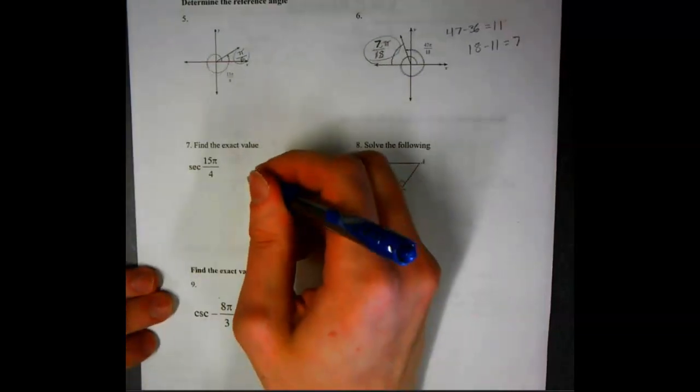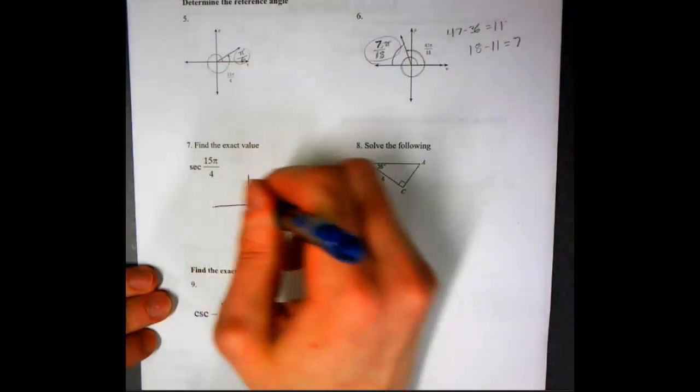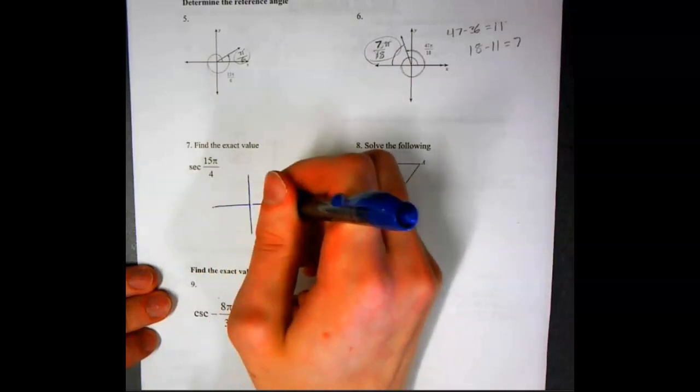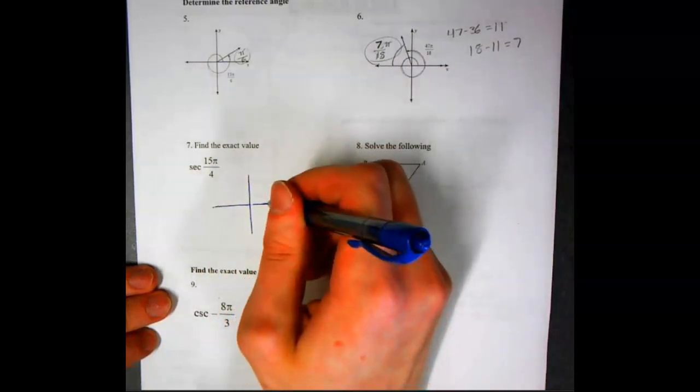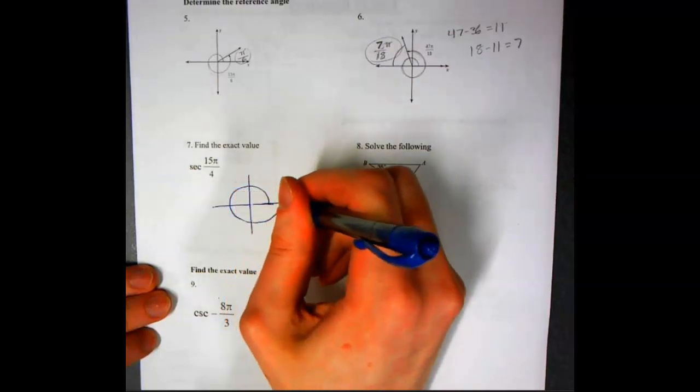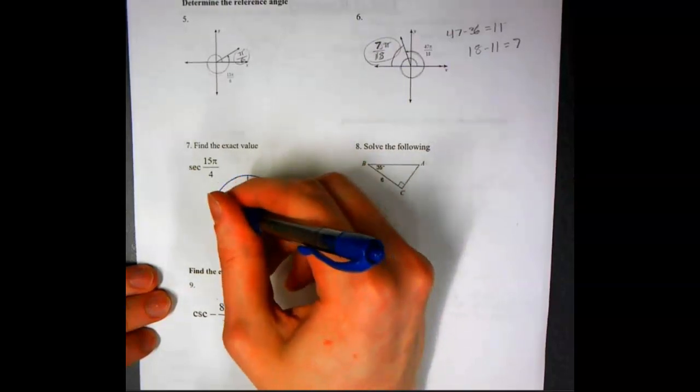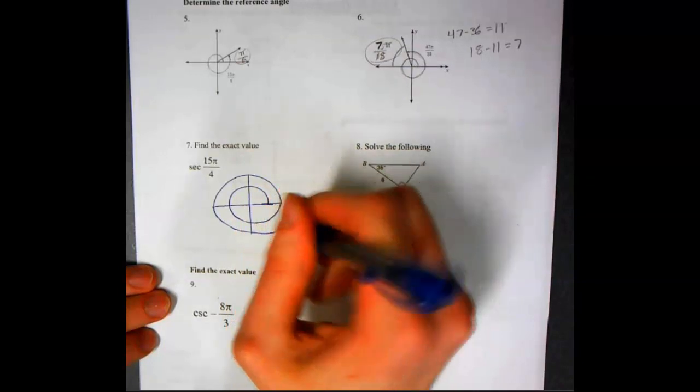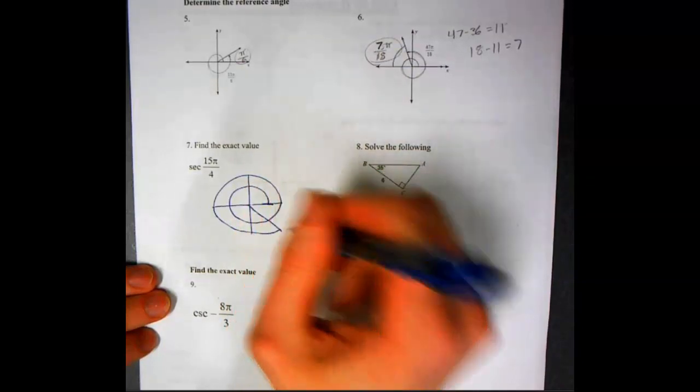we're going to be starting out by, you can draw your circle if you need to, or your coordinates. So you'll do 4, 8, 12, and then not all the way because that would be 16. So here's 15.